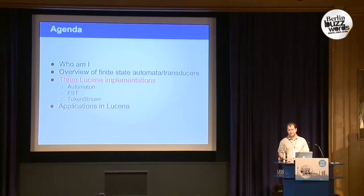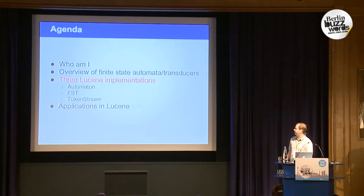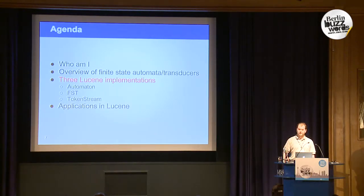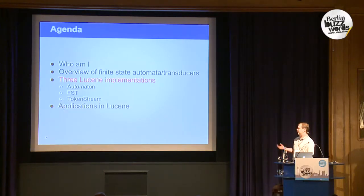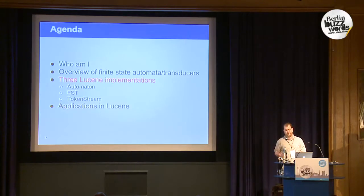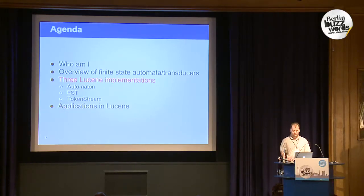In Lucene, we have three implementations. We have the FSA — the set. Then we have the FST — the map. And then we have our analysis API, which is actually another FSA, so it's another set.